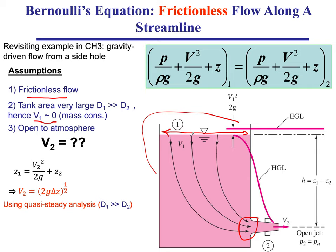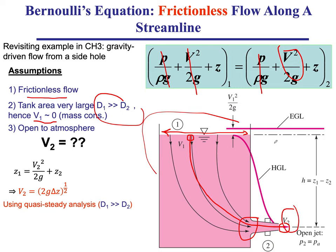If we had frictionless flow and drew a streamline between two points — one on the surface and one at the outlet — both open to atmosphere, we can apply Bernoulli's equation. The pressure is atmospheric at both points. Under the assumption that the tank is infinitely large, the velocity at the surface is zero, leaving a relationship between the jet velocity and the height difference delta z.